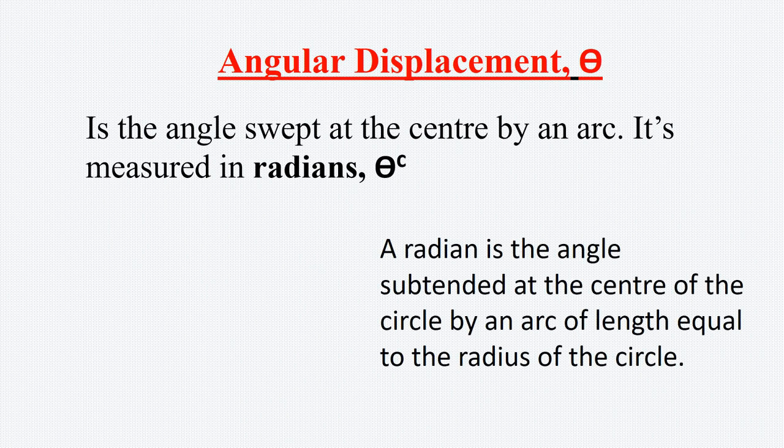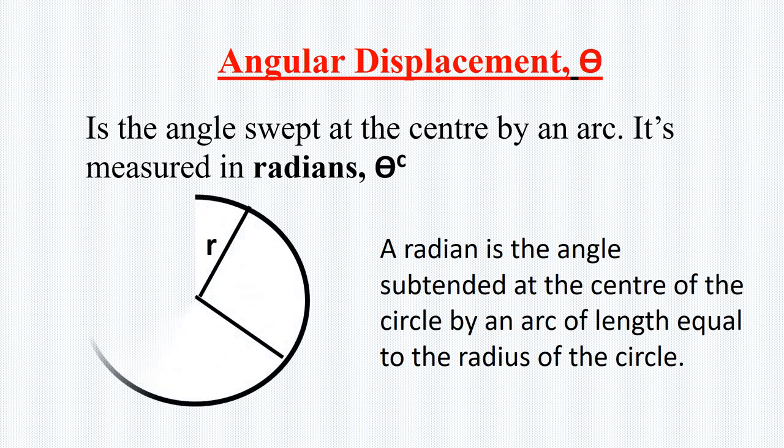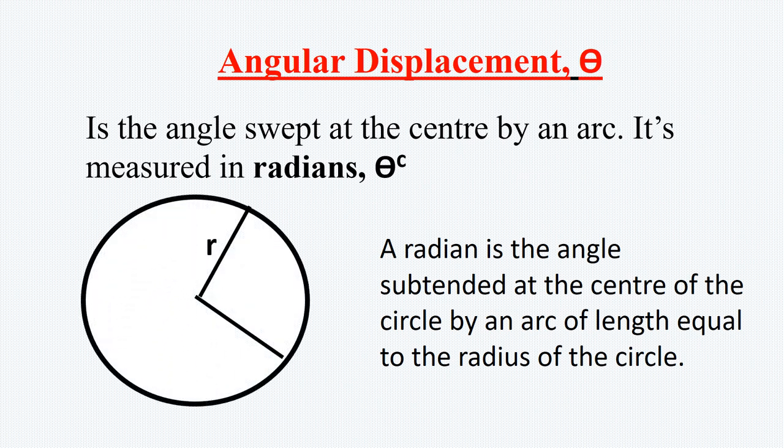The radian is the angle subtended at the center of the circle by an arc of length equal to the radius of the circle. The circle is of constant radius. The angle subtended at the center is theta, and therefore it subtends an arc which is s.